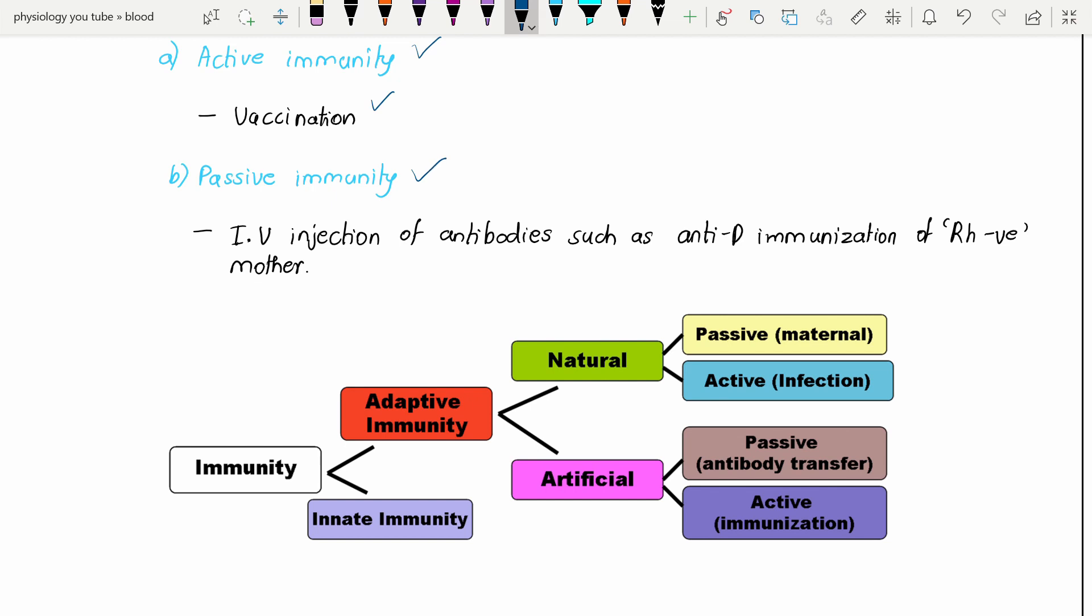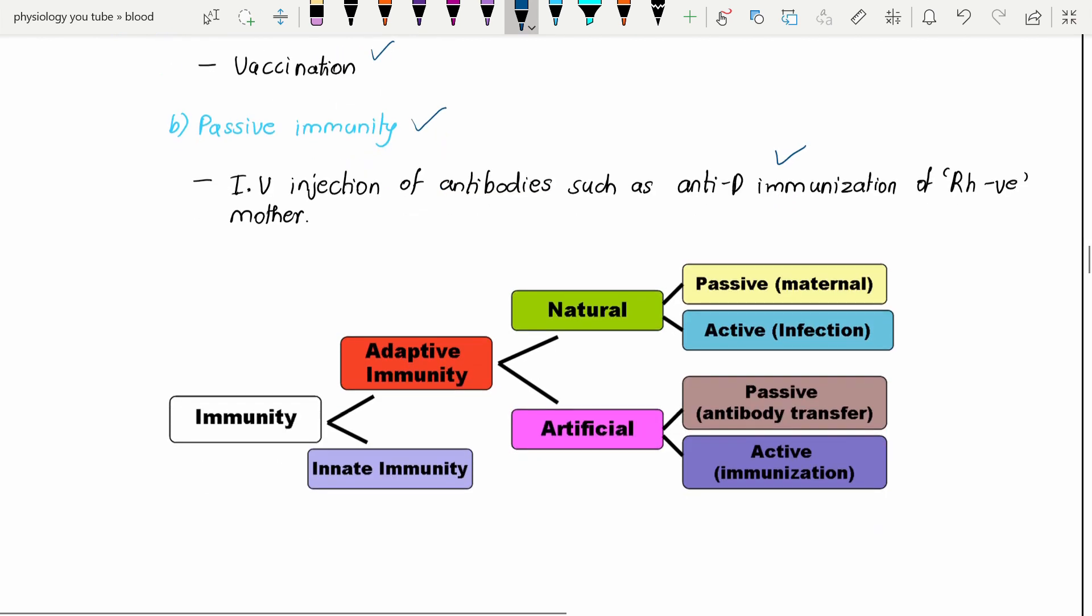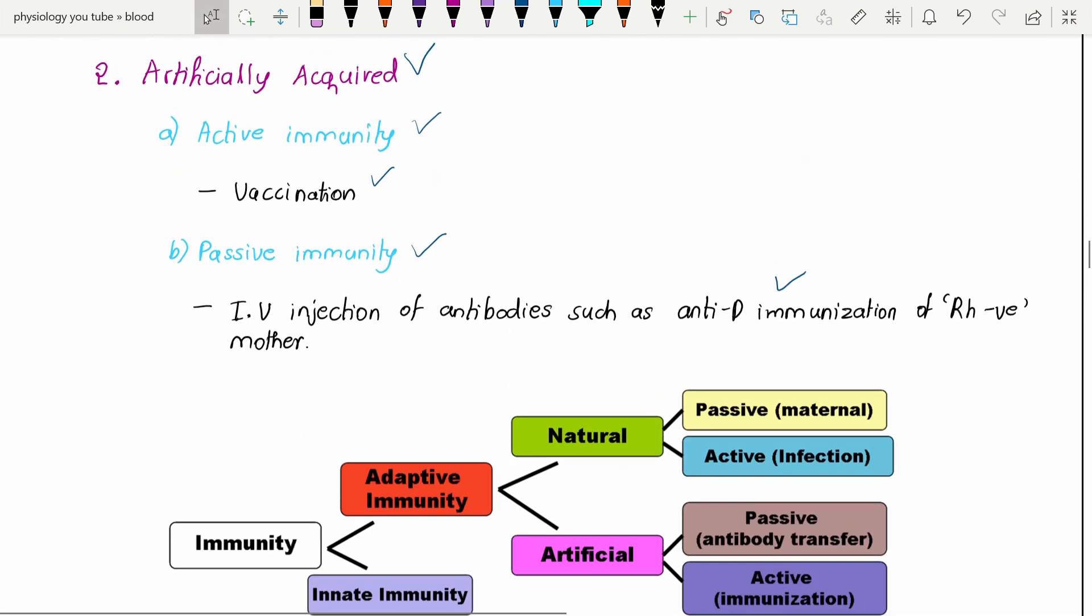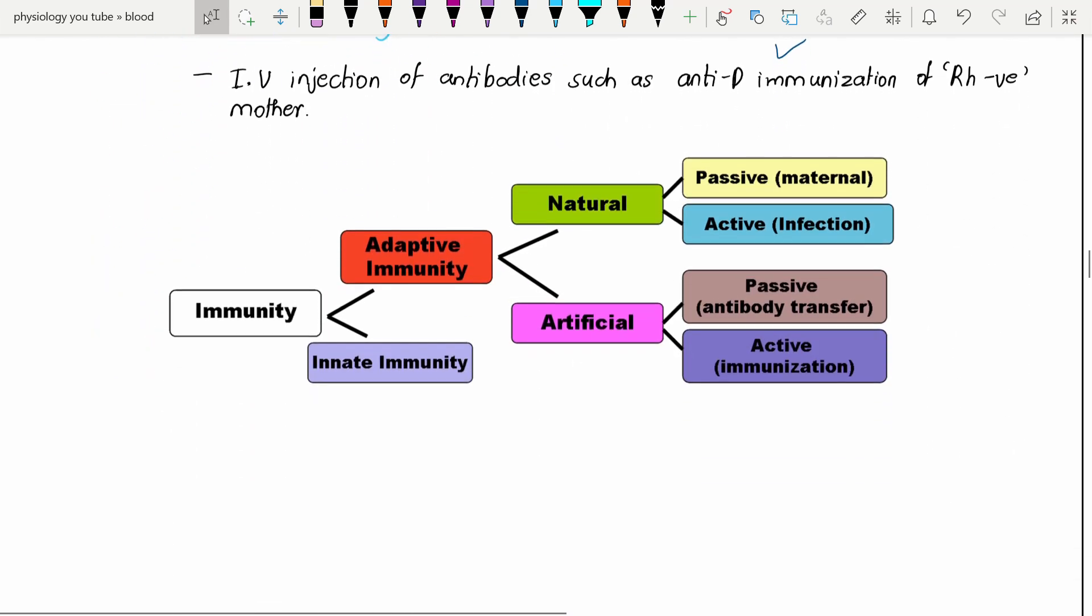Passive immunity - IV injections such as anti-D antibodies that we will give to the mother soon after her first delivery, which is involved in the passive immunity of the artificially acquired type of immunity.